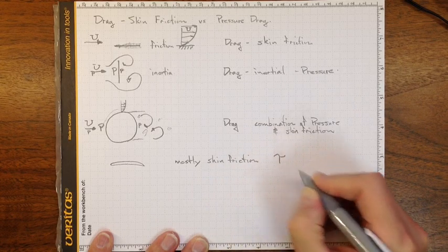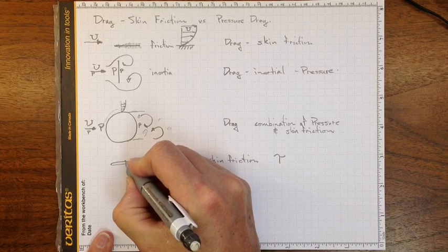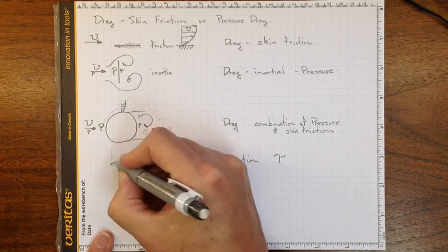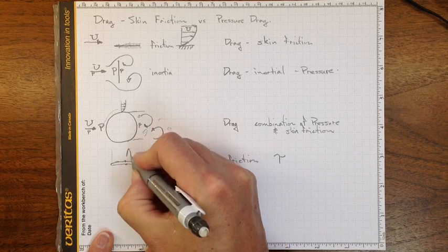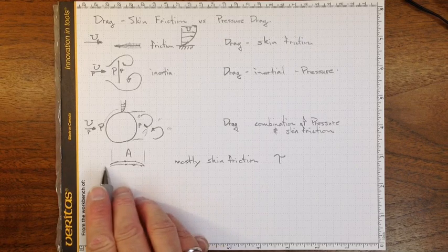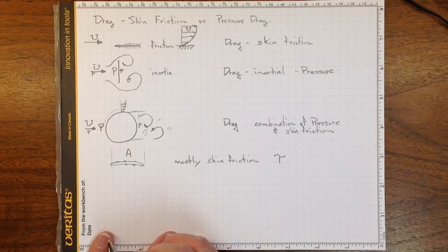It depends on the shear stress all along these surfaces here. So it depends primarily on the area of the outside of the wing or whatever the streamlined body is.